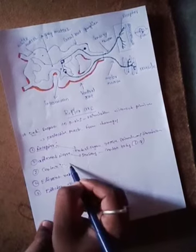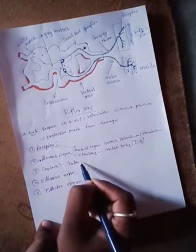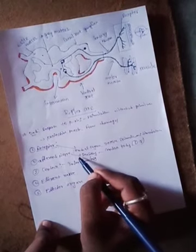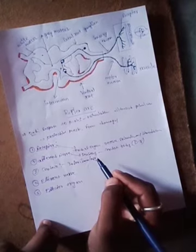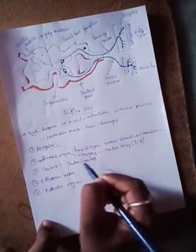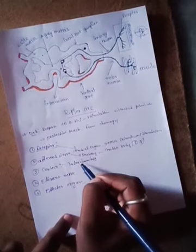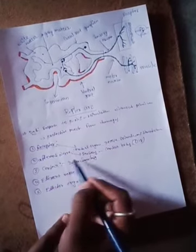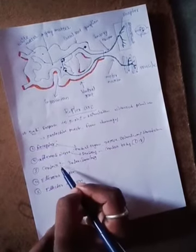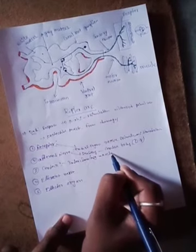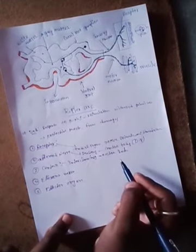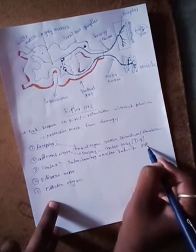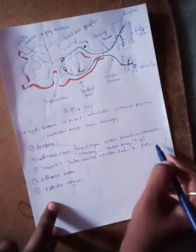The center receives the information or impulse or message from the afferent nerve, the sensory nerve, and in turn generates the appropriate motor impulse. The afferent nerve collects the information from the receptor. The center collects information from the sensory nerve, converts sensory information to motor information, and generates motor information.